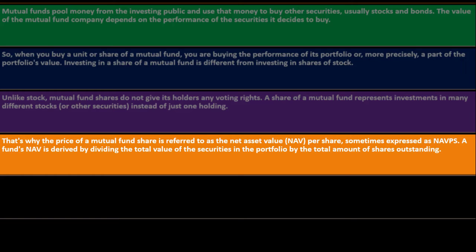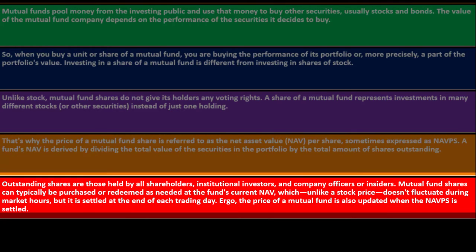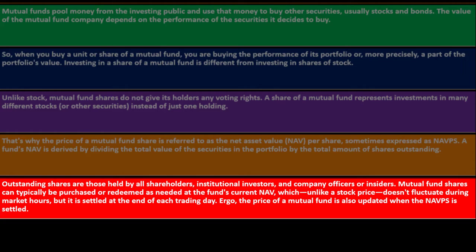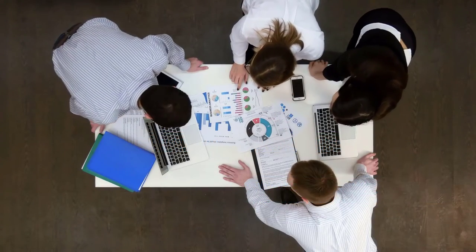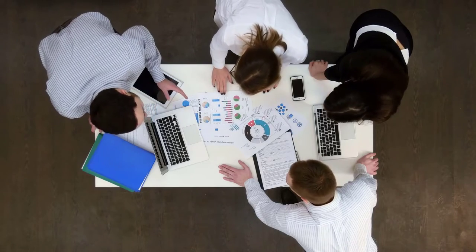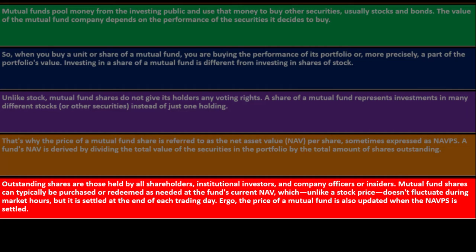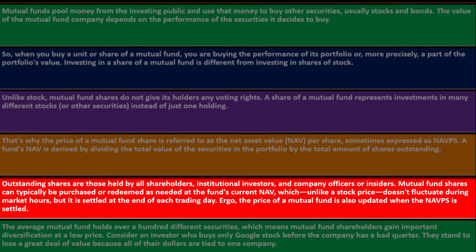The price of a mutual fund share is referred to as the Net Asset Value (NAV) per share, sometimes expressed as NAVPS. A fund's NAV is derived by dividing the total value of the securities in the portfolio by the total amount of shares outstanding. Outstanding shares are those held by shareholders, institutional investors, and company officers or insiders. Mutual fund shares can typically be purchased or redeemed at the fund's current NAV, which unlike a stock price doesn't fluctuate during market hours — it is settled at the end of each trading day. The price of a mutual fund is updated when the NAVPS is settled.